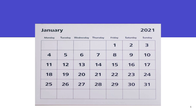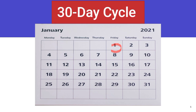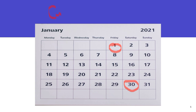Welcome back. Let us assume that this person starts menses on the 1st of January and starts another menstruation on the 30th of January. What it means is that the length of the menstrual cycle is 30.